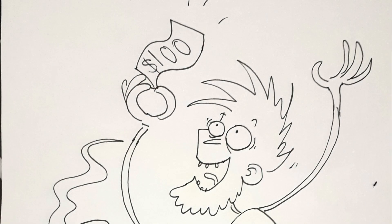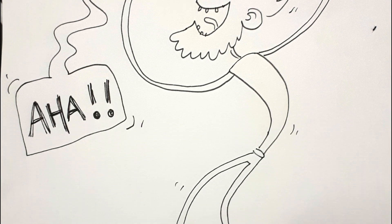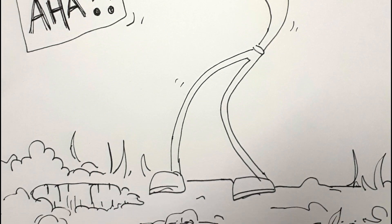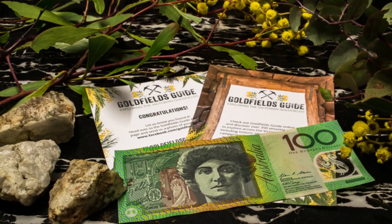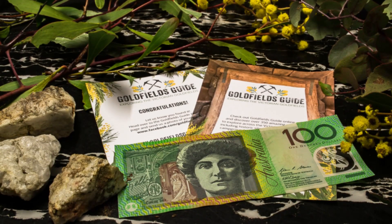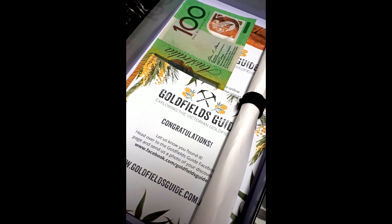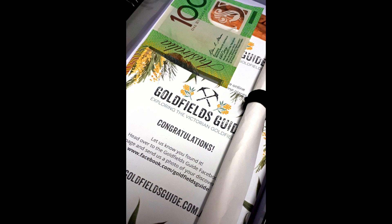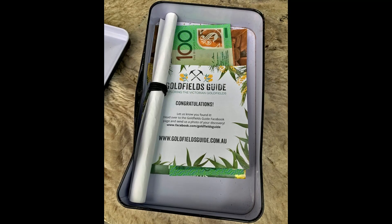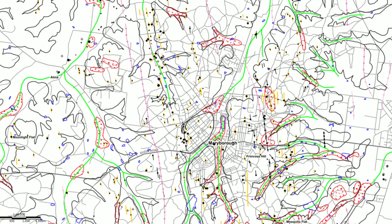Stay tuned to this channel in the coming weeks as I'm planning a treasure hunt somewhere in the Victorian goldfields for anyone who's got a metal detector on hand. This will be a throwback to a treasure hunt I did a few years ago where I buried a hundred bucks in a tin in a bushland reserve near Maryborough then announced it on the goldfields guide website. It was found by Darren on day two. Thanks for watching. Don't forget to subscribe and turn on notifications.